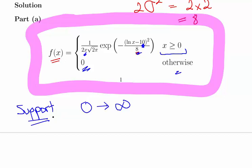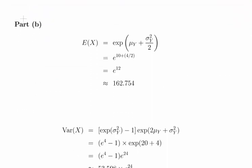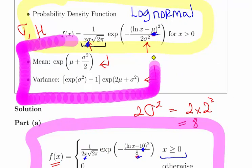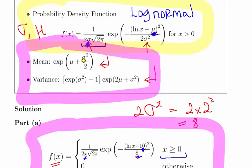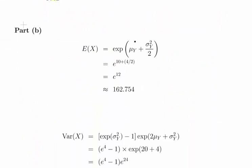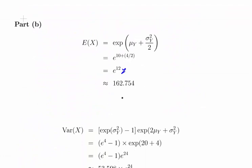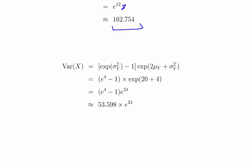Part B is straightforward enough. What we're going to do here is use our formula, these two here. Again, mu is equal to 10 and sigma squared is equal to 4, so we should get 12 there, 4 over 2. Sigma squared over 2, which works out to be 162.754. These numbers get quite big quite quickly, so I'm not necessarily going to expect you to write them out fully.